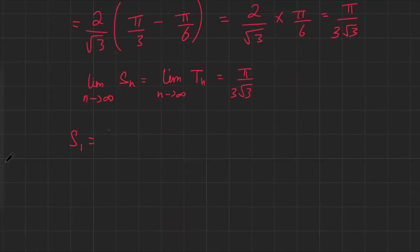S of 1 is 1 over 3 and T of 1 is 1. We know that π is greater than 3. If I do (π over 3 root 3) divided by (1 over 3), I'm going to get π over the square root of 3, which is greater than 1. So, we do know that this expression here is greater than S of 1, for sure.